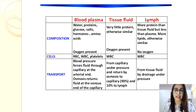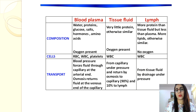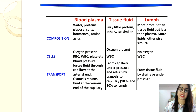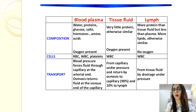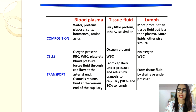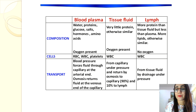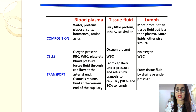Regarding transport: blood pressure forces fluid through the capillary at the arterial end, and osmosis returns the fluid at the venous end. Tissue fluid exits the capillary under pressure and about 85% is returned by osmosis to the capillary, while the other 15% goes to the lymph. Lymph is transported from tissue fluid by drainage under pressure as well. Review these differences so you understand all three fluids.